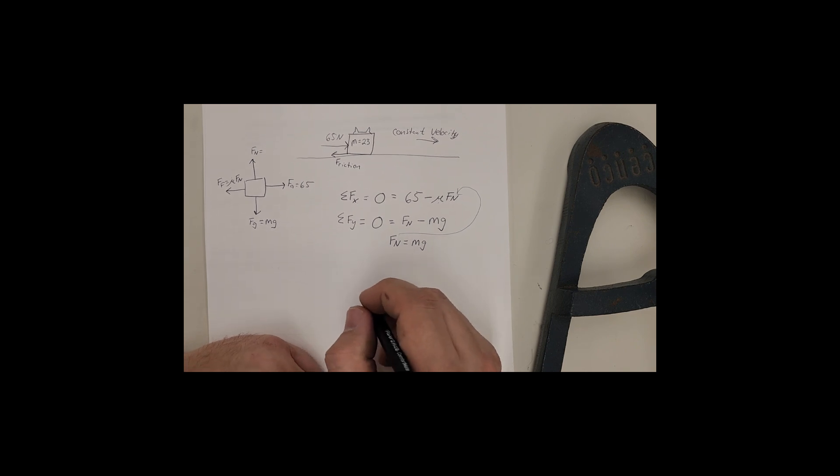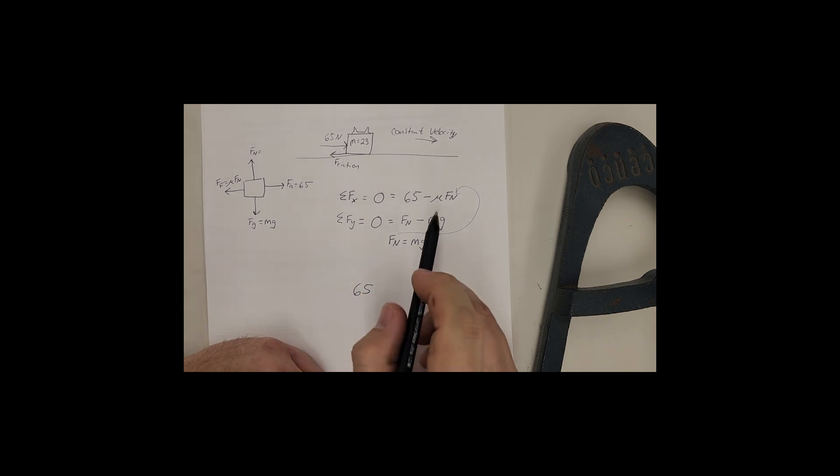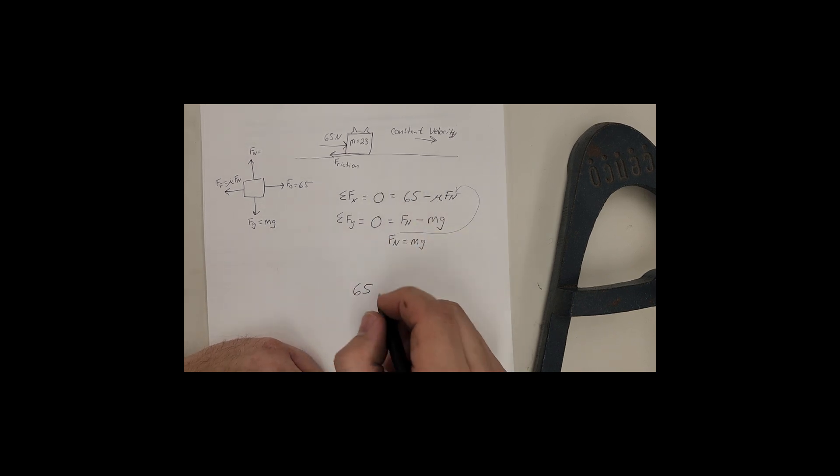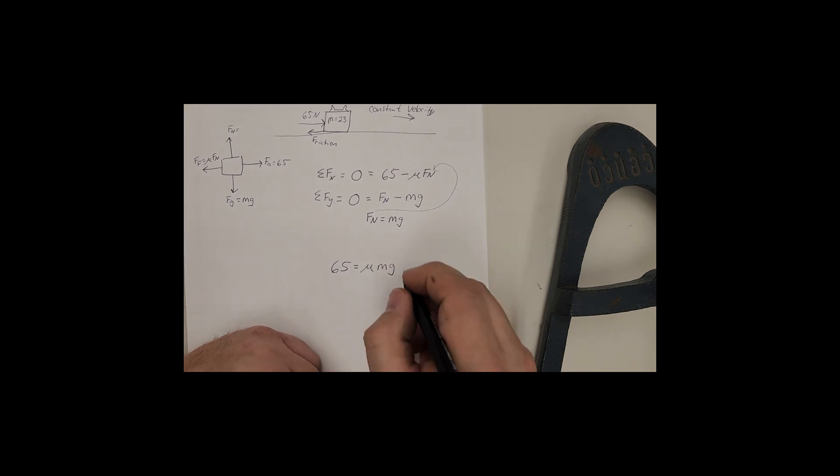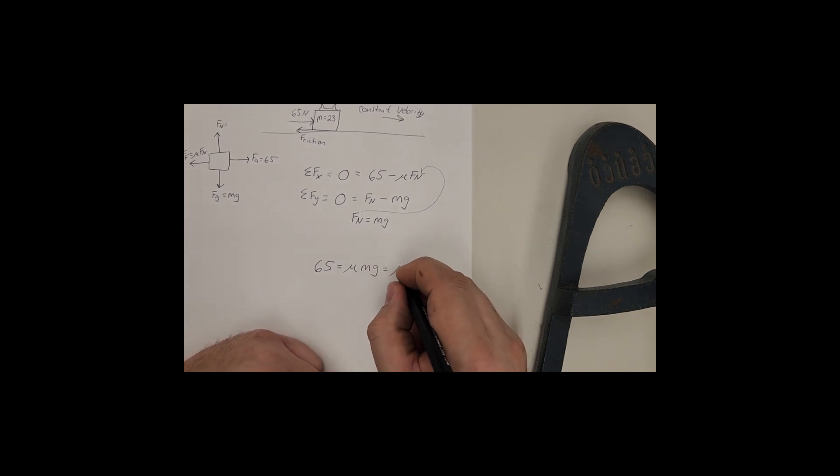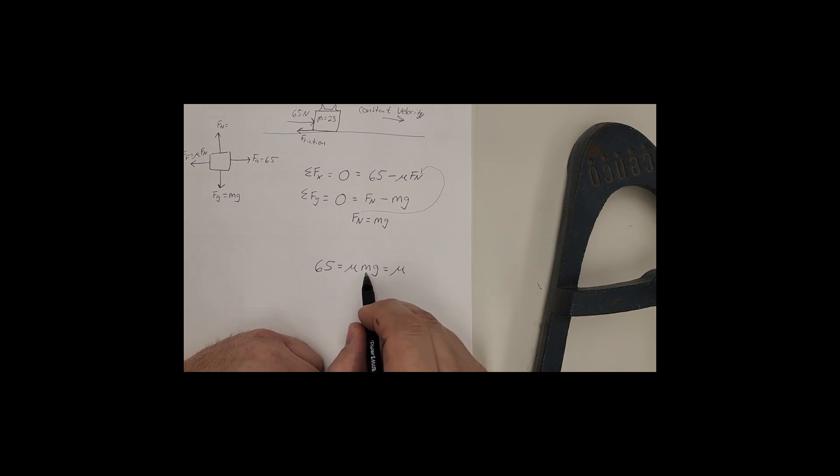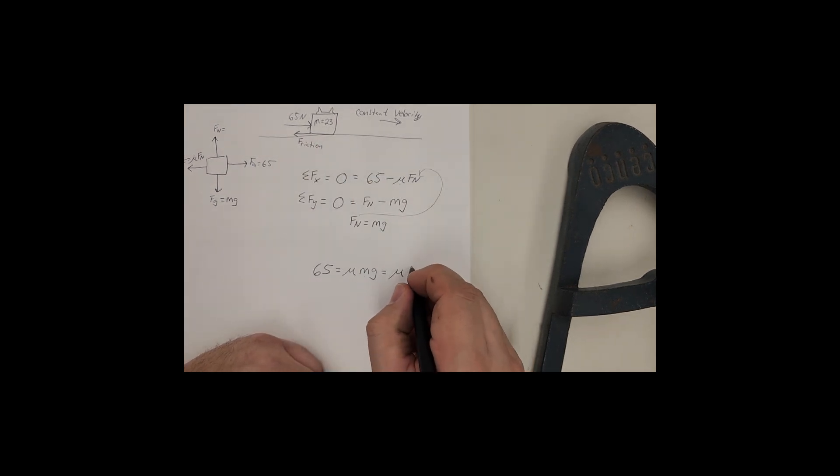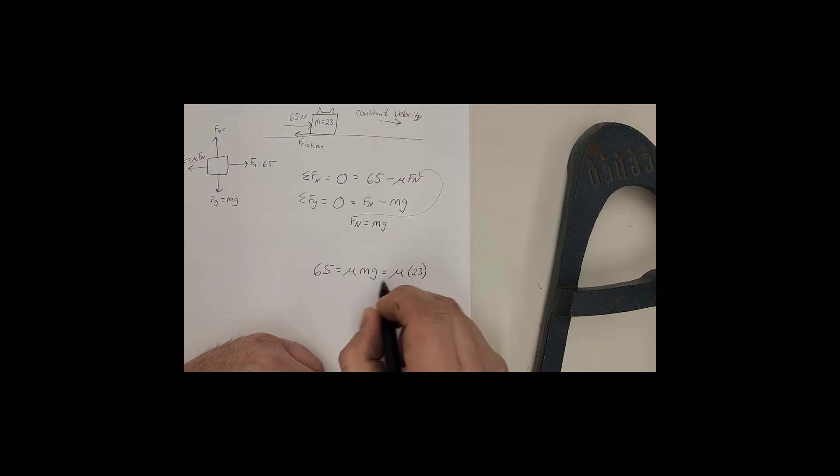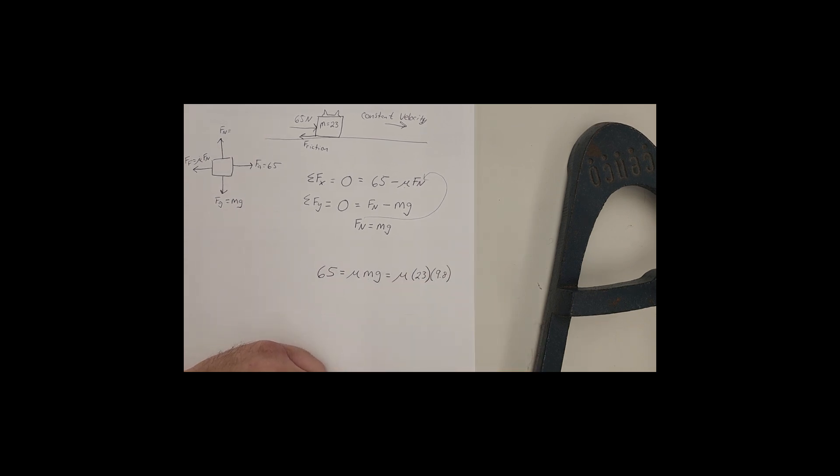So I'm going to have 65. And I'm going to add this whole mess to the other side. So 65 is equal to mu, the normal force I will replace with m g. So now I'm looking for mu. I know what m is. m was given in the problem as 23. So let me put in 23. And I know what g is. That's just a constant due to gravity. That's 9.8.